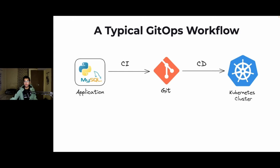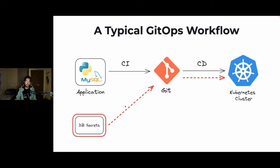What does a typical GitOps workflow look like? We have the full CI/CD pipeline — the continuous integration part where our application is stored in a code repository like GitHub or GitLab, and then the continuous deployment part taking our source code from Git and deploying it onto a Kubernetes cluster. The concern here is, for example, you have an application using Python as the backend and MySQL as a database. We have to store our code on Git, but we have database secrets — MySQL secrets — that our application needs to function. We will not want to store these secrets directly on Git.